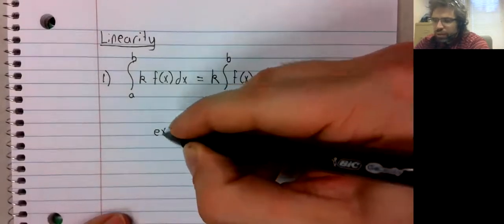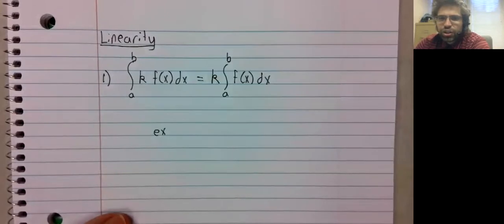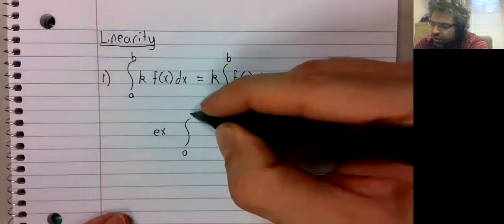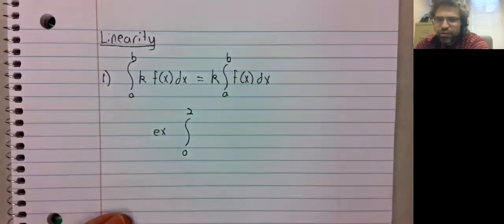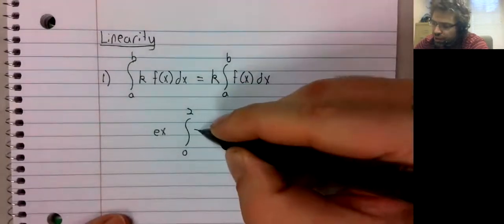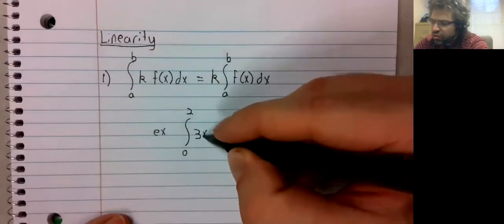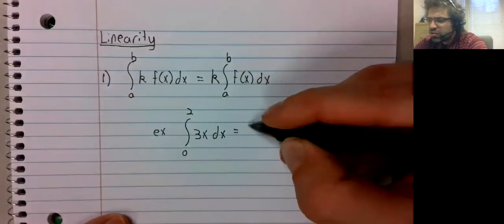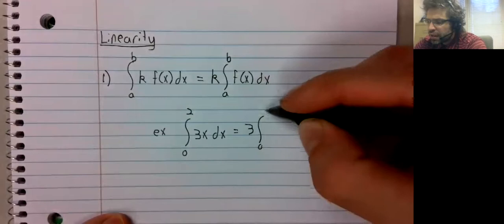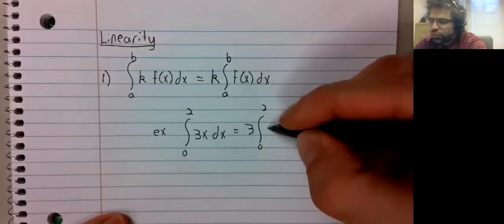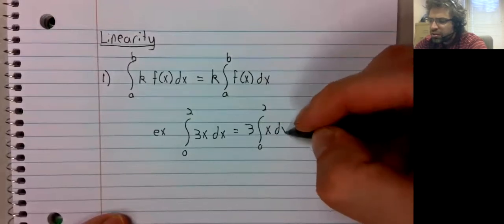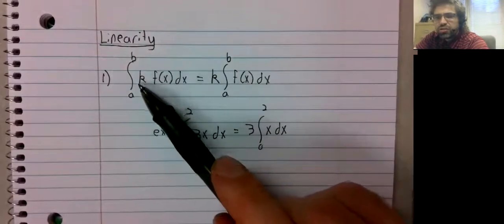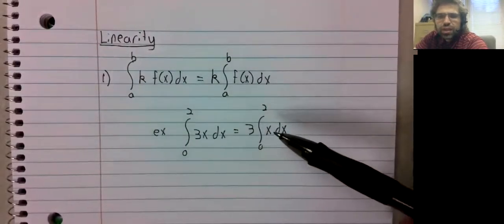We're pretty limited in what we can actually do here as an example, because we don't really have a good way of taking integrals. But the integral from 0 to 2 of 3x dx is 3 times the integral from 0 to 2 of x dx. Let me emphasize we can only move constants out. This x is stuck in here.